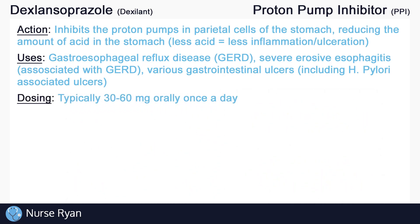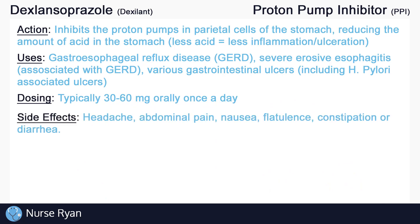In adults, Dexilant is typically ordered at 30-60mg orally once a day. PPIs generally have relatively few side effects. The most common include headache, abdominal pain, nausea, flatulence, constipation, and diarrhea. These side effects typically occur less than 5% of the time.